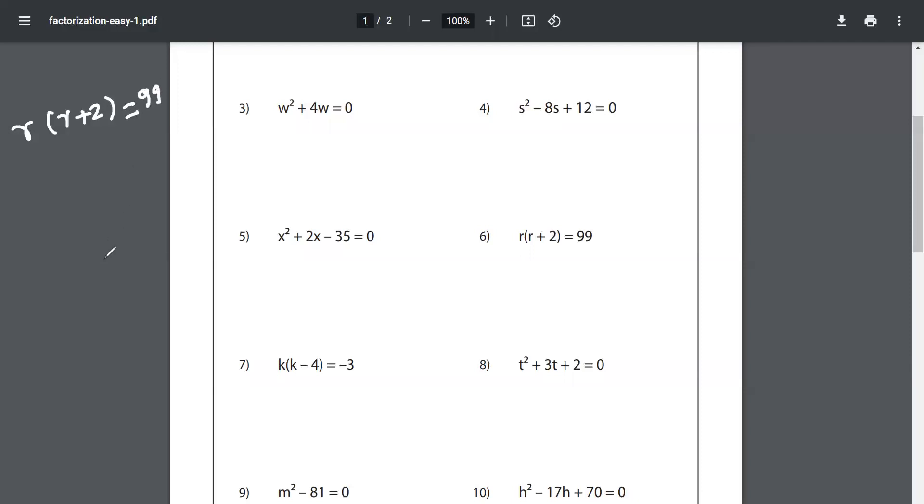When mathematicians are being tested, what will you do with this? You will multiply this out: r² + 2r = 99. You will solve this as r² + 2r - 99 = 0.